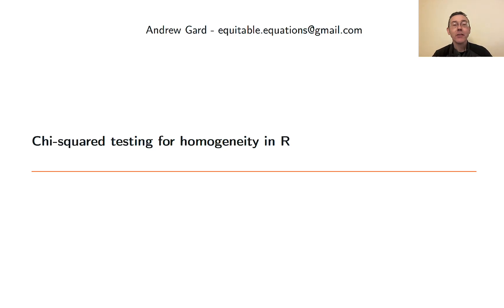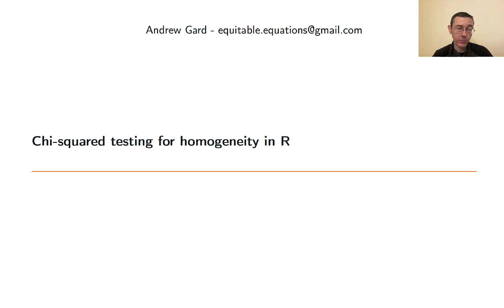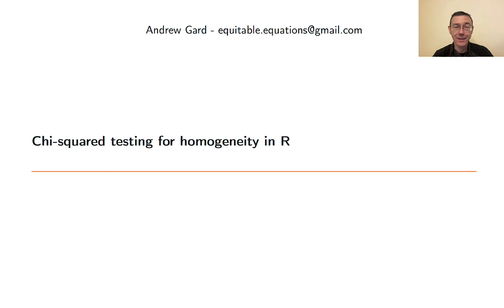Hey everybody. Today we're talking about chi-squared testing for homogeneity in R. A chi-squared test for homogeneity is useful when you have two samples of a categorical variable and you're interested in whether those samples might potentially have come from identical populations — identical insofar as that categorical variable is concerned.